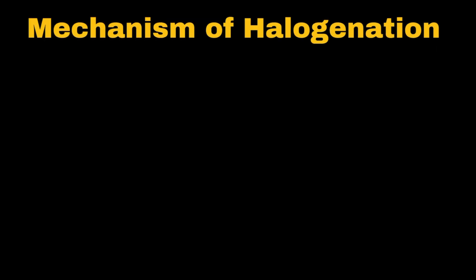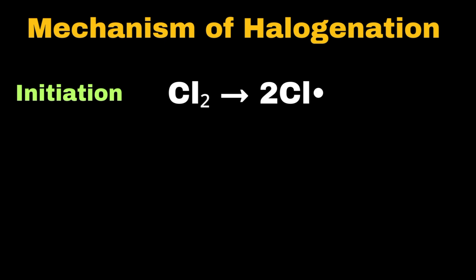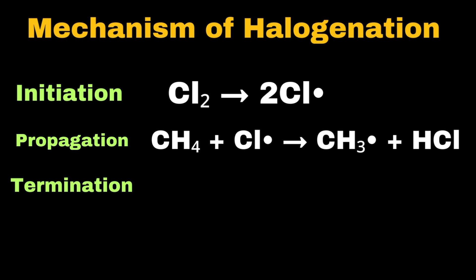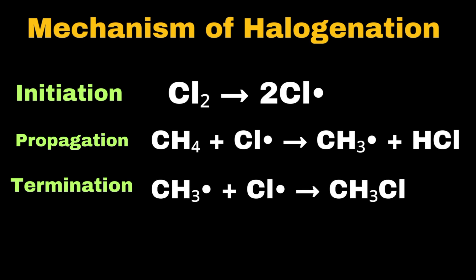In the halogenation mechanism, during initiation, a chlorine molecule Cl2 breaks down into two chlorine radicals. During propagation, these chlorine radicals react with methane to produce many valuable products by the successive replacement of hydrogen atoms with halogen. Finally, during termination, a methyl radical reacts with a chlorine radical to produce methyl chloride, and no new radical is formed, ending the process.